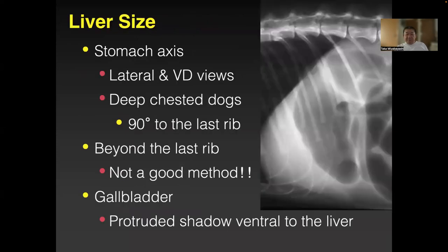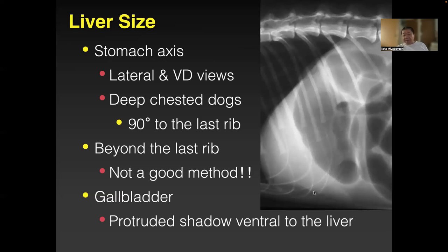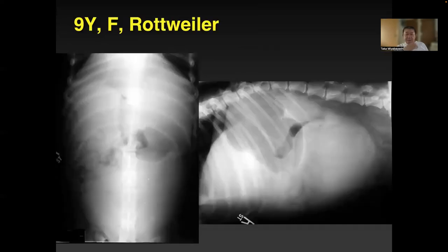Liver size — the 'stomach axis beyond the last rib' rule is not great because most normal dogs show the ventral tip beyond the rib cage. Check the gallbladder area — you often see stones and sand. In cats especially, ventral to the liver they accumulate fat, and you get a protruding appearance. If you see that, it's probably a descending gallbladder.